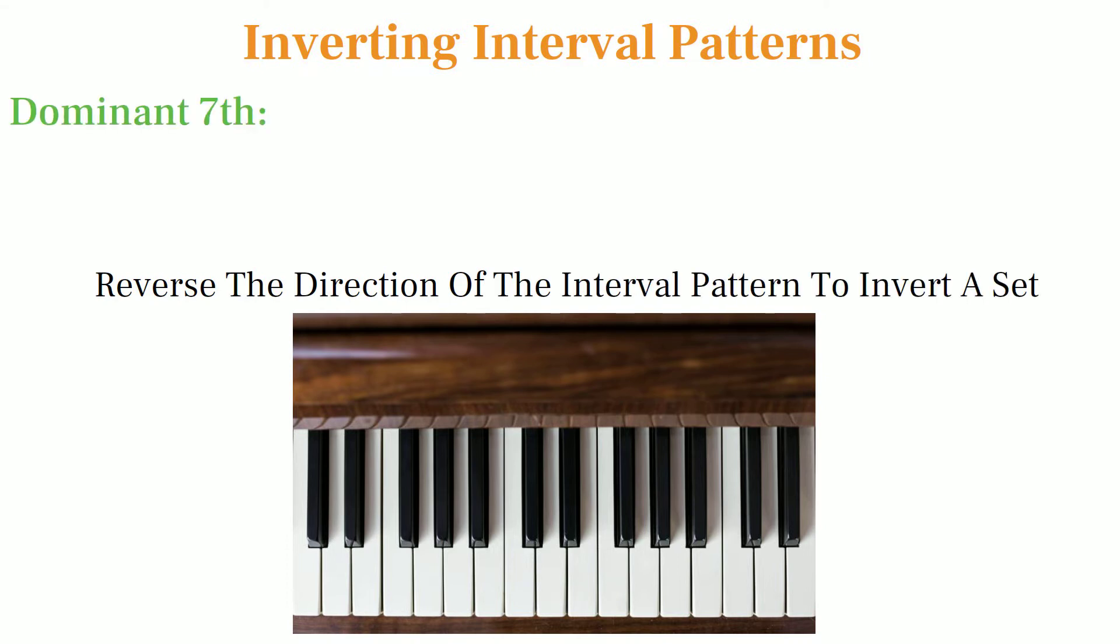Let's take the dominant 7th chord as an example with the interval pattern plus 4, 3, 3, 2. To invert this chord, we turn the plus sign into a minus sign and move down for every number in the interval pattern. This means we would begin at the same starting point and instead move down 4 semitones, down 3, down 3, down 2, to invert the set.